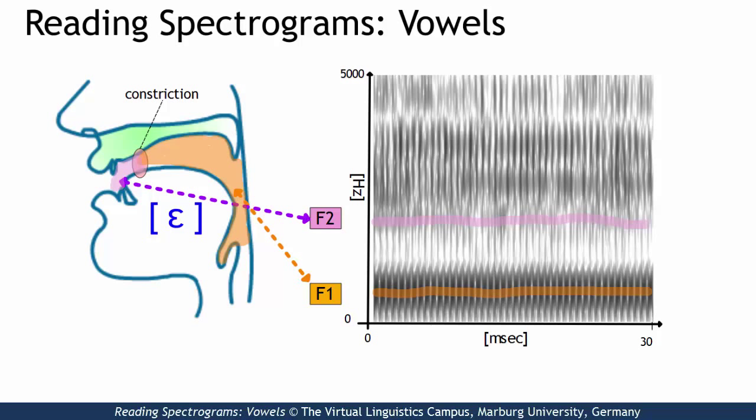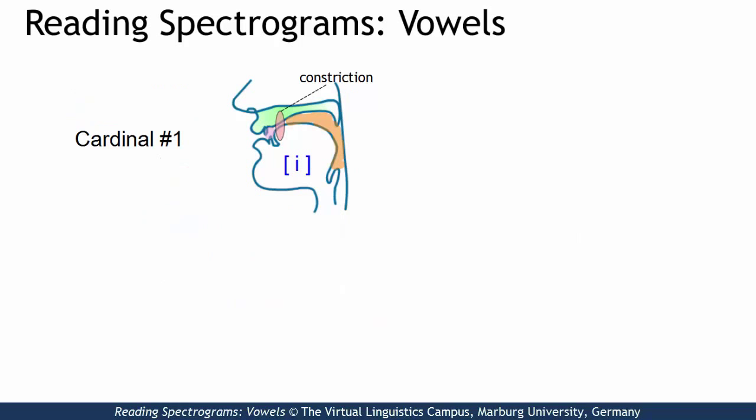Let's compare two more vowels to illustrate that. Cardinal vowel 1 with a front constriction, a large pharyngeal cavity and a small oral cavity, and cardinal vowel number 5 with a back constriction and thus a much smaller pharyngeal cavity and a relatively large oral cavity.